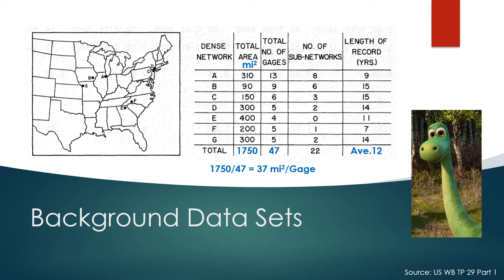A little bit of background: there wasn't a lot of data to actually do a great job developing these curves, yet they are used all over the world. There were only seven dense networks identified, ranging from 90 to 400 square miles. The average length of record was about 12 years — not much data at all to make these kinds of estimates that impact so much of our designed water infrastructure.